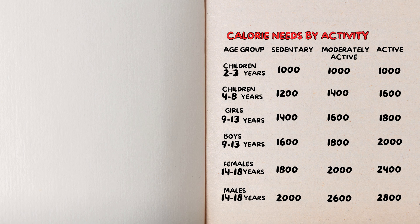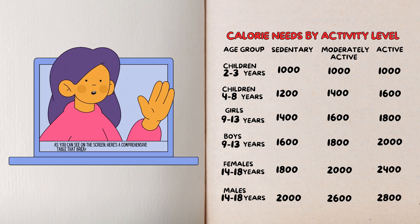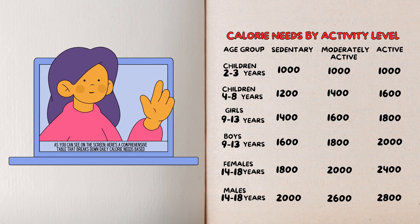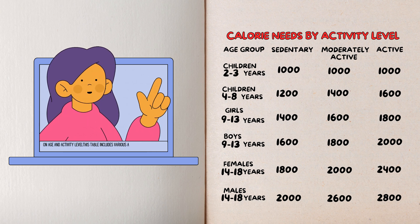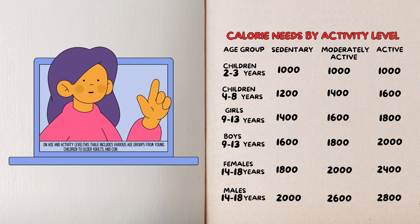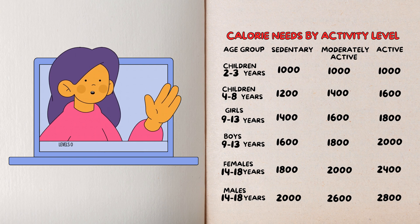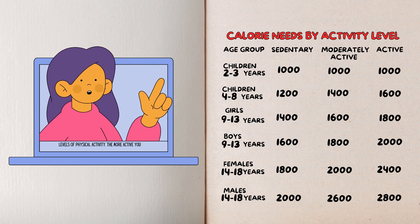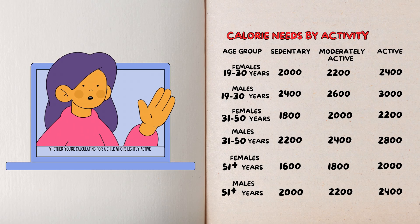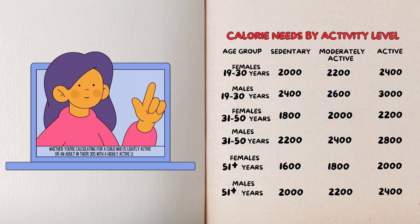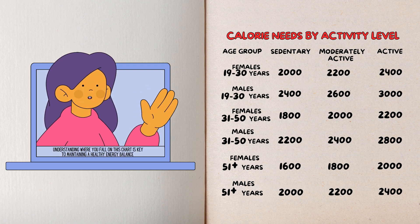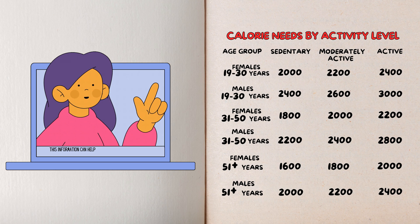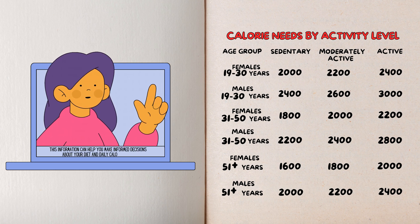Calorie needs by activity level. Now, as you can see on the screen, here's a comprehensive table that breaks down daily calorie needs based on age and activity level. This table includes various age groups, from young children to older adults, and considers different levels of physical activity. The more active you are, the higher your energy requirements will be. Whether you're calculating for a child who is lightly active, or an adult in their 30s with a highly active lifestyle, understanding where you fall on this chart is key to maintaining a healthy energy balance. This information can help you make informed decisions about your diet and daily calorie intake.